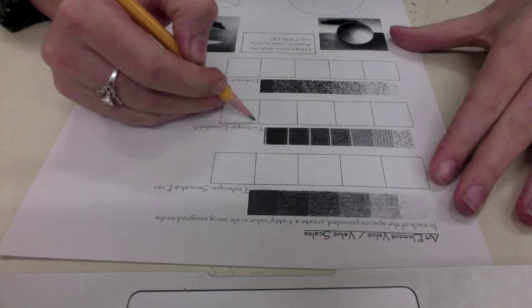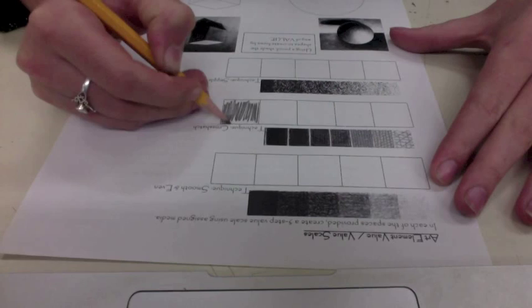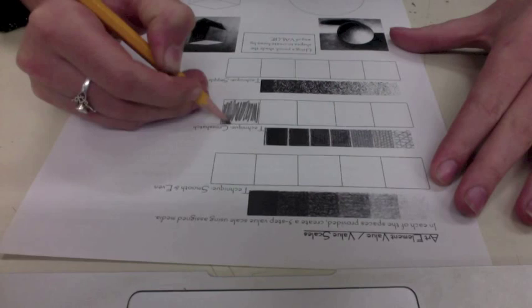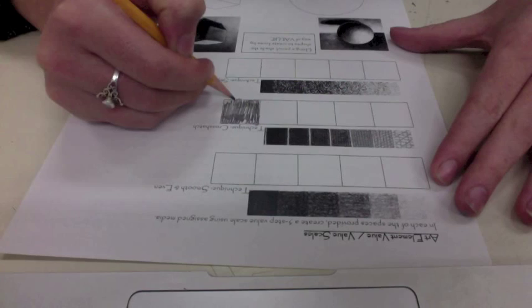The first box, the darkest box, is going to be pretty much just colored in with your pencil. Make sure you keep the lines going in pretty much the same direction. I'm going up and down, but you could do side to side.